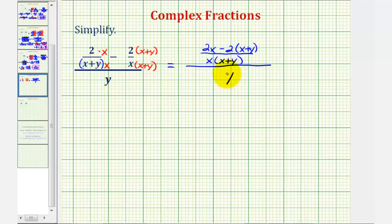This is still over y. And now we'll simplify this numerator by clearing the parentheses and combining like terms. So the denominator is going to stay the same.